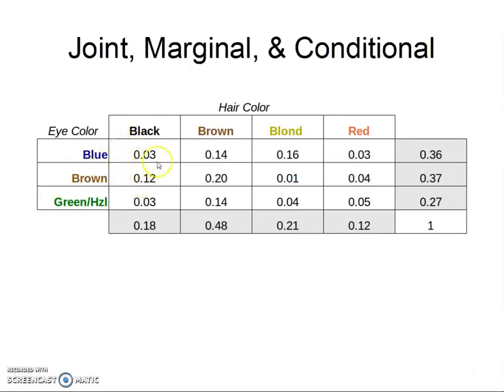We've talked about joint probabilities, these individual cells in the middle. We've talked about marginal probabilities, the sum of the joint probabilities in a given column or row, these guys in the margins.